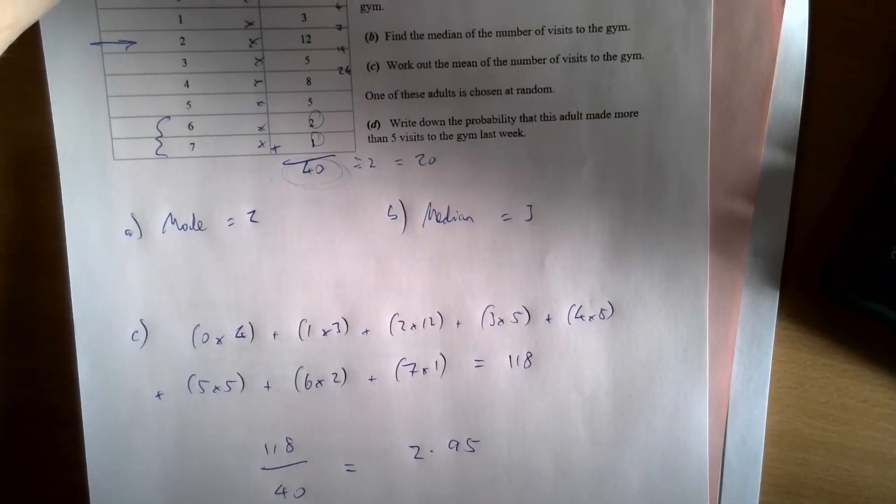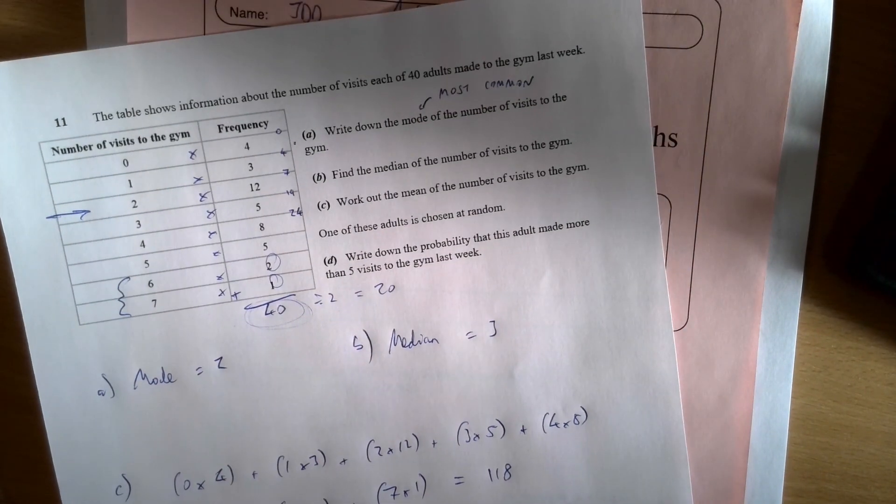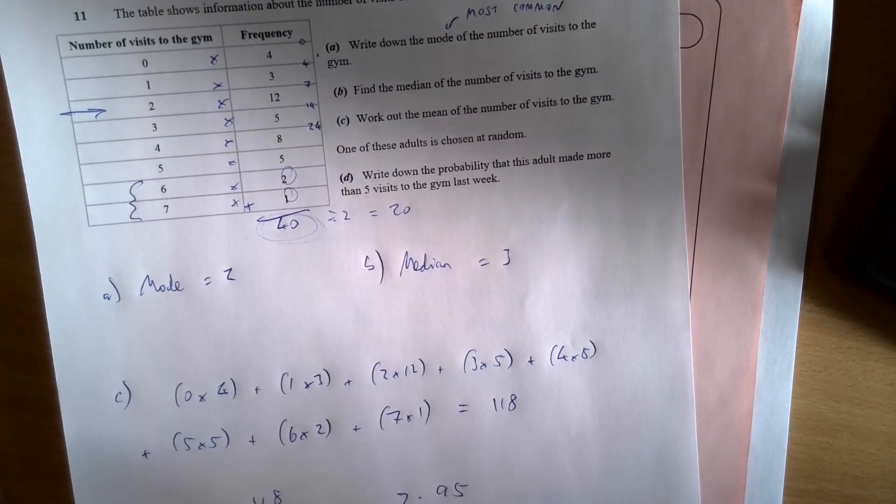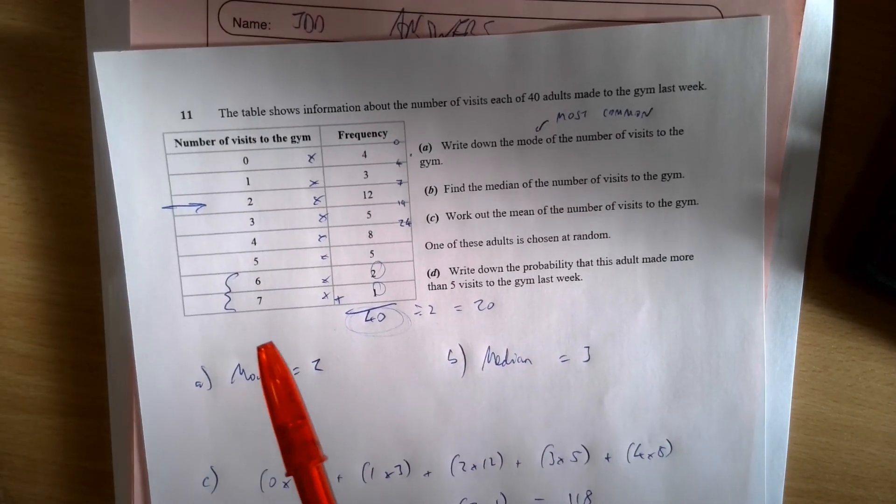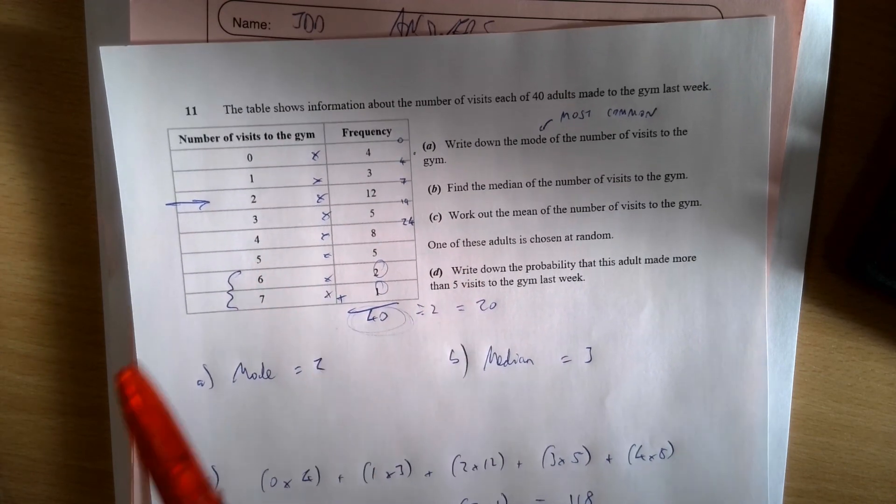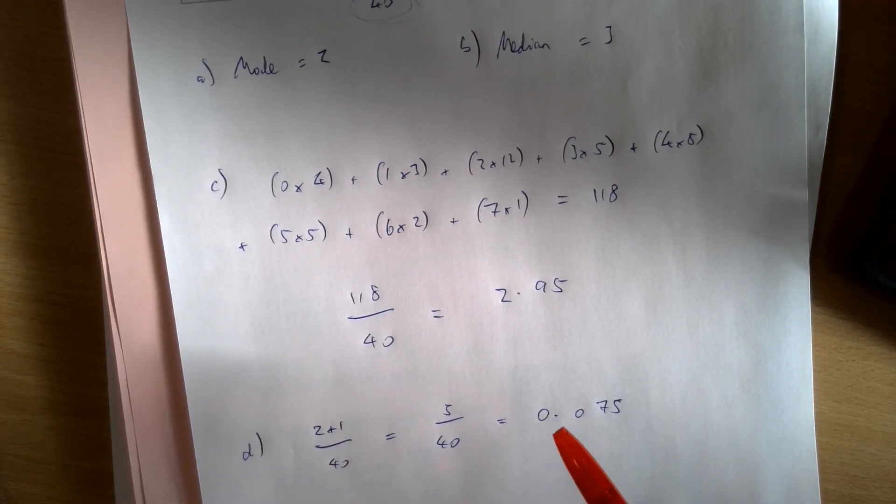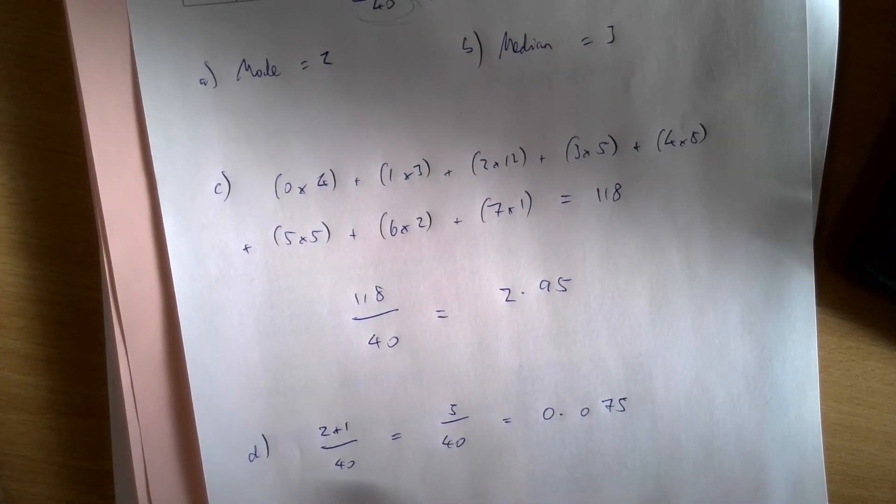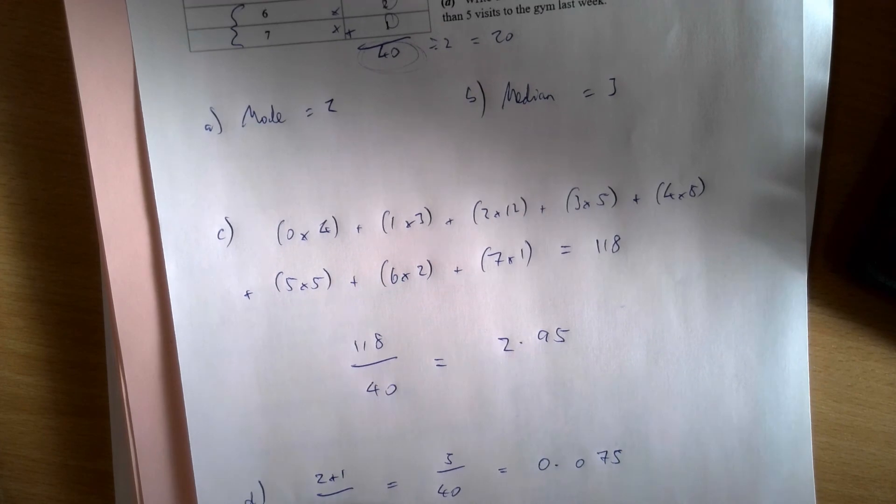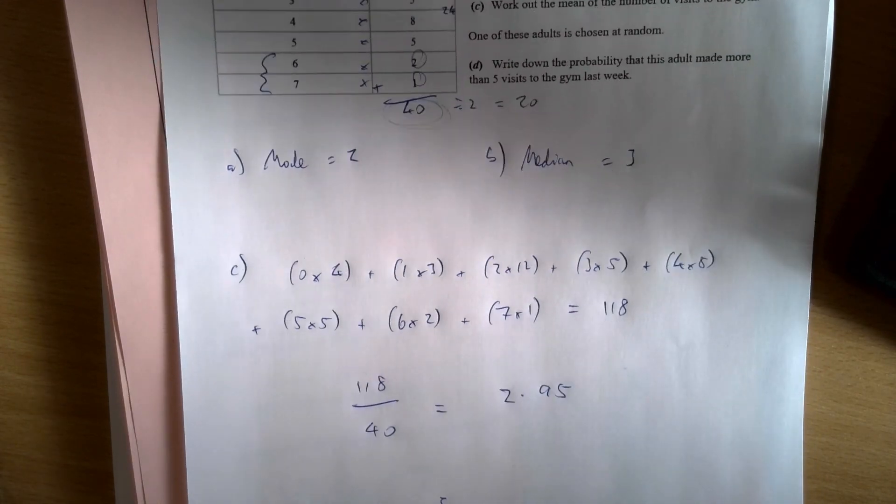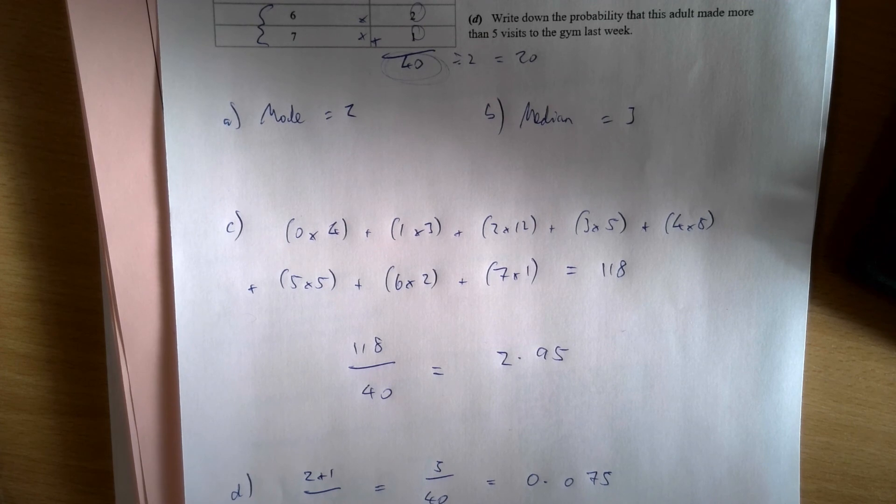That's the whole question. Finding the mode, just the most common, the median, halfway up the total frequency. Finding the mean by multiplying the number of visits by the frequency and then adding it all together, dividing by the total frequency. And then we can apply it more specifically to probabilities by just using common sense and understanding what the question says. I hope that helps. It's a bit of a long one, this one. Hopefully they won't get much longer. Take care. I'll see you soon.